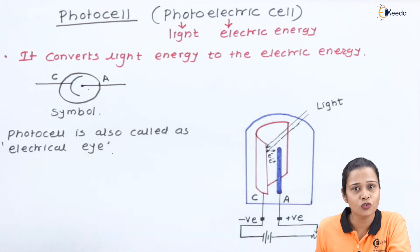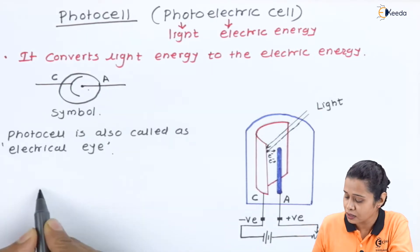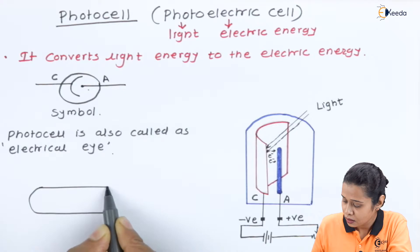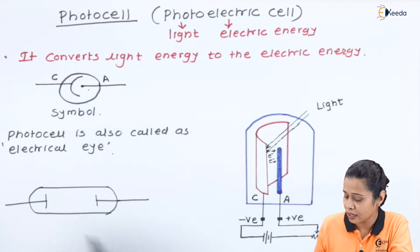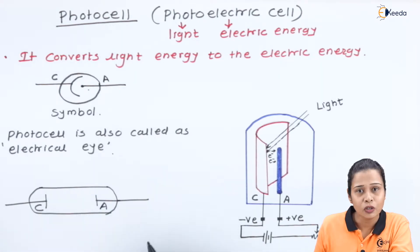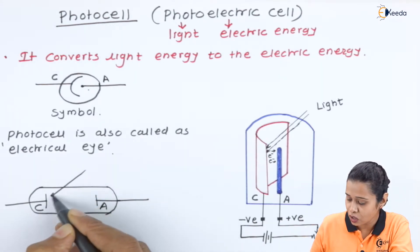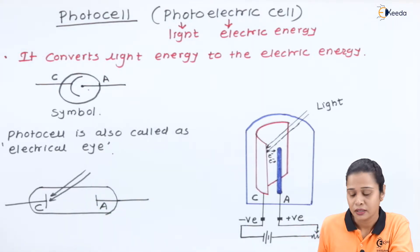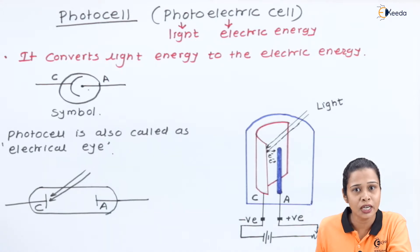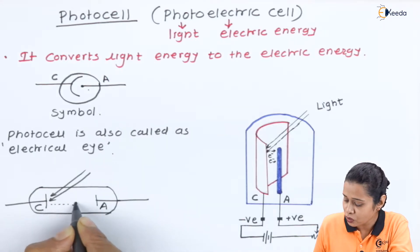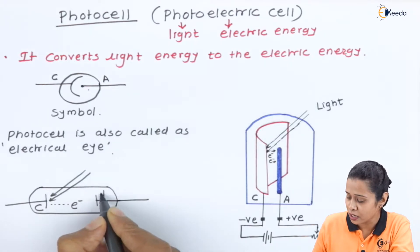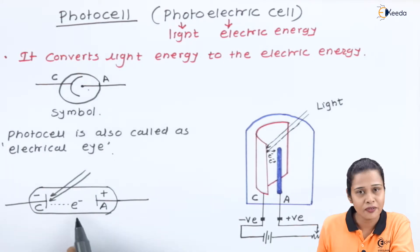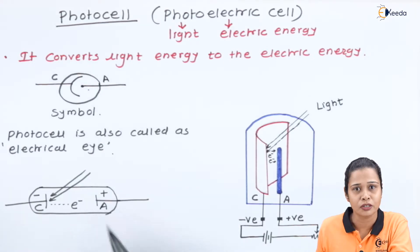When light of suitable frequency is incident on the cathode, that is the metal plate, then according to the photoelectric effect, if the frequency is sufficient to remove the electron, there is an emission of electrons from the cathode. The anode is at positive potential, and since the electron has a negative charge and the anode has a positive charge, there is an attraction between the electron and the positive charge.